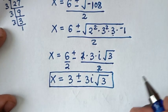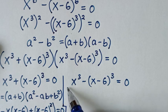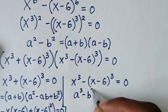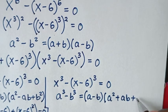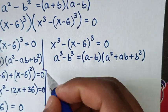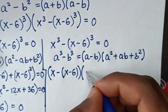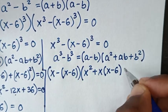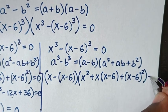Now for the second solution, x power 3 minus x minus 6 bracket power 3 equals 0, which is in the form of a difference of cubes. We apply the rule: a cubed minus b cubed equals a minus b bracket times a squared plus ab plus b squared bracket. Here a is x and b is x minus 6, giving x minus x minus 6 bracket, times x squared plus x times x minus 6 bracket plus x minus 6 bracket squared, equals 0.